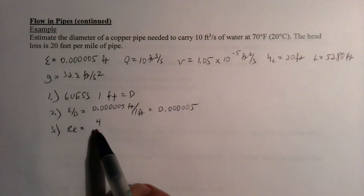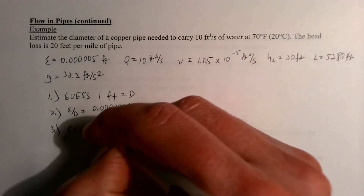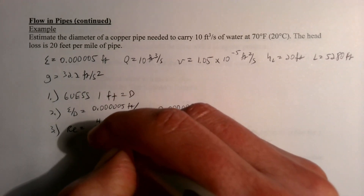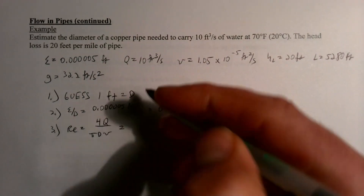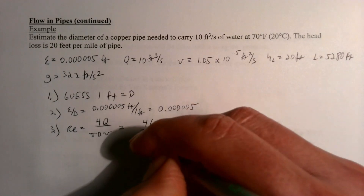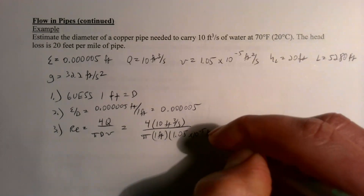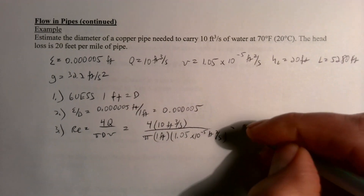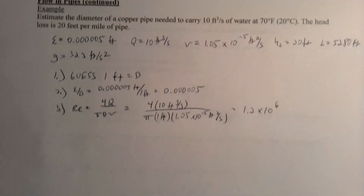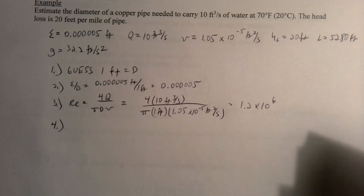Plugging in: Re = (4 × 10 ft³/s) / (π × 1 ft × 1.05×10⁻⁵ ft²/s) = 1.2×10⁶. Both the relative roughness and Reynolds number are dimensionless. With these two values we can use either the Moody chart or the Swamee-Jain equation to get the friction factor — either approach gives essentially the same answer to two significant figures.